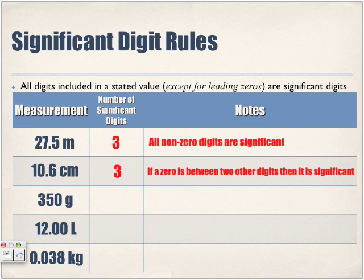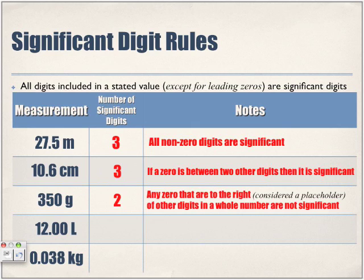350 grams — how many significant digits? Two significant digits. Any zero to the right that is a placeholder in a whole number is not significant. So the 3 and the 5 are significant, but the zero is there just to show how big the number is. For 12.00 liters, there are four significant digits.